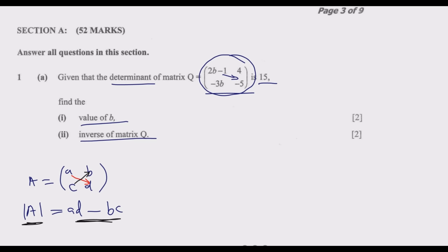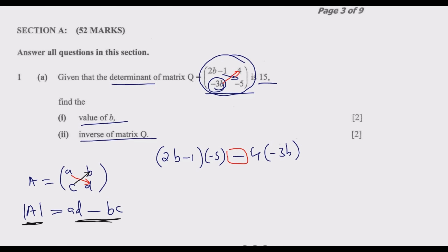So we multiply (2B minus 1) by negative 5, then subtract 4 multiplied by negative 3B. We equate this whole expression to 15 because we are told that the determinant is 15. It is then just a matter of expanding and dealing with the negatives and positives.